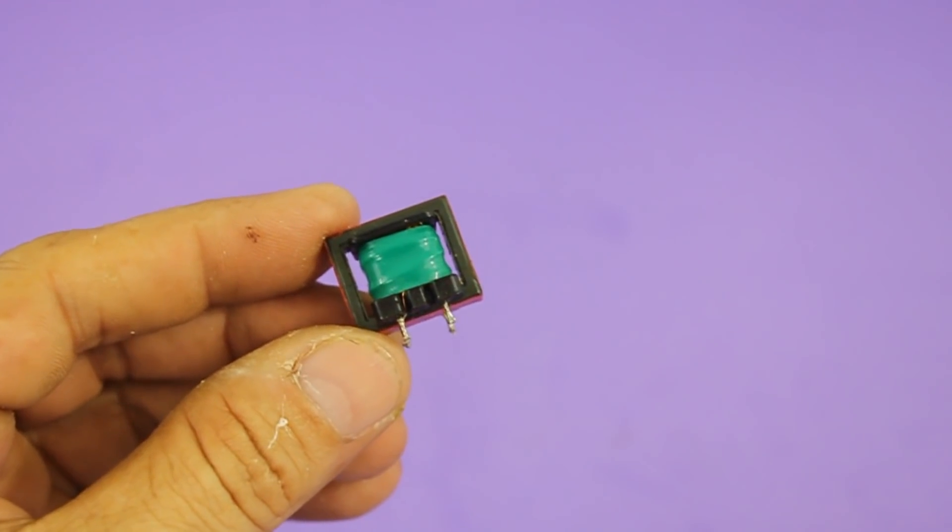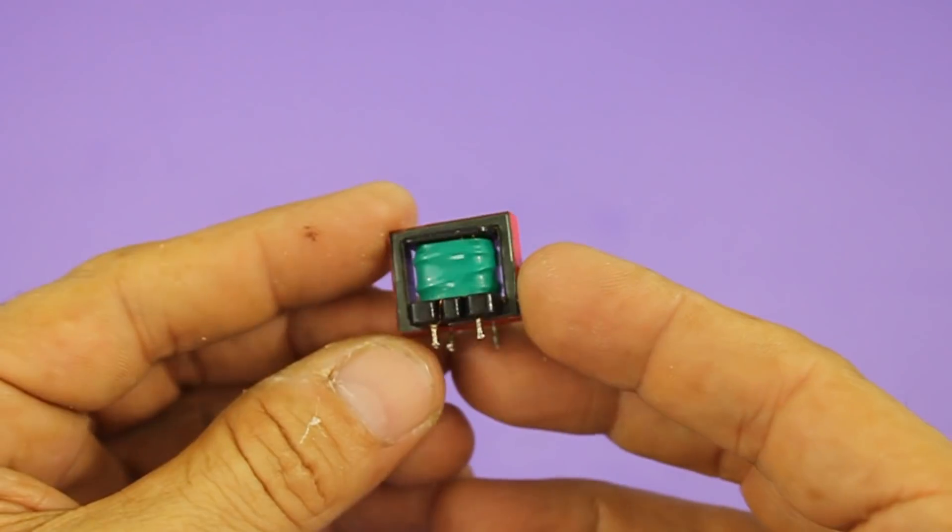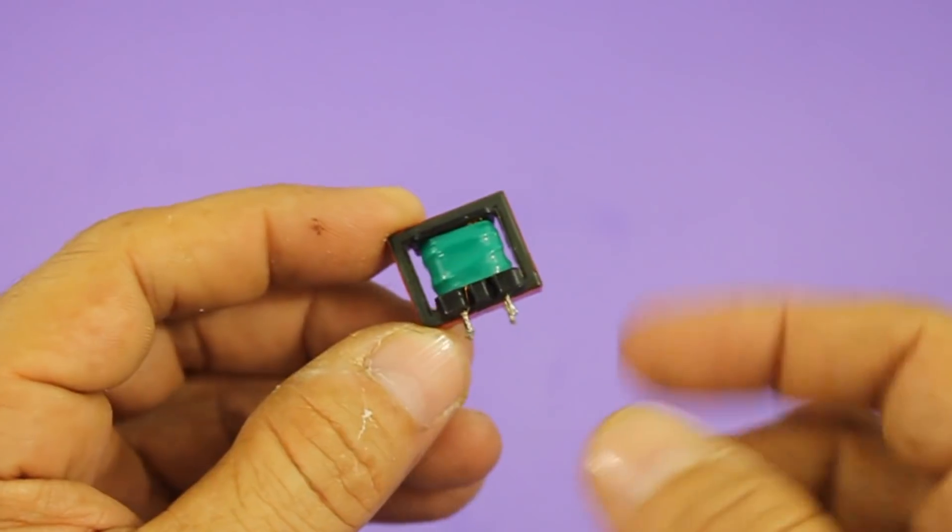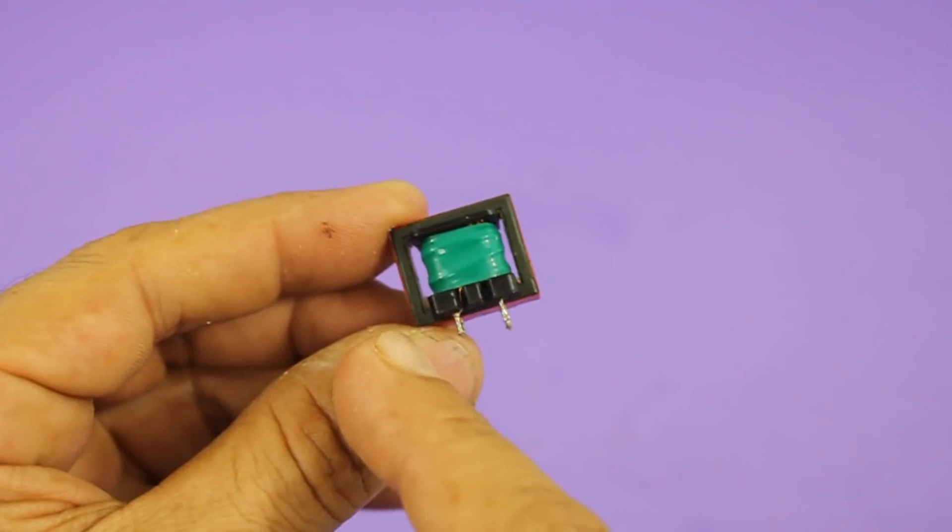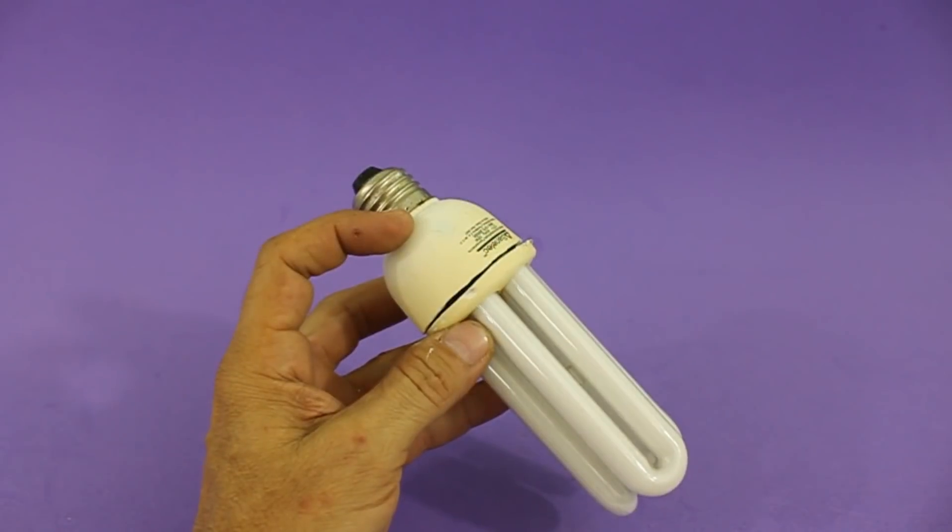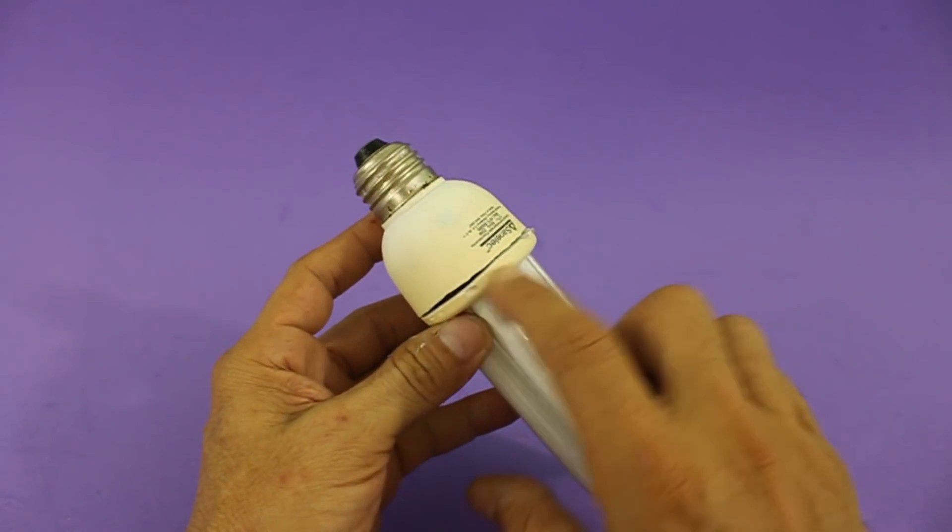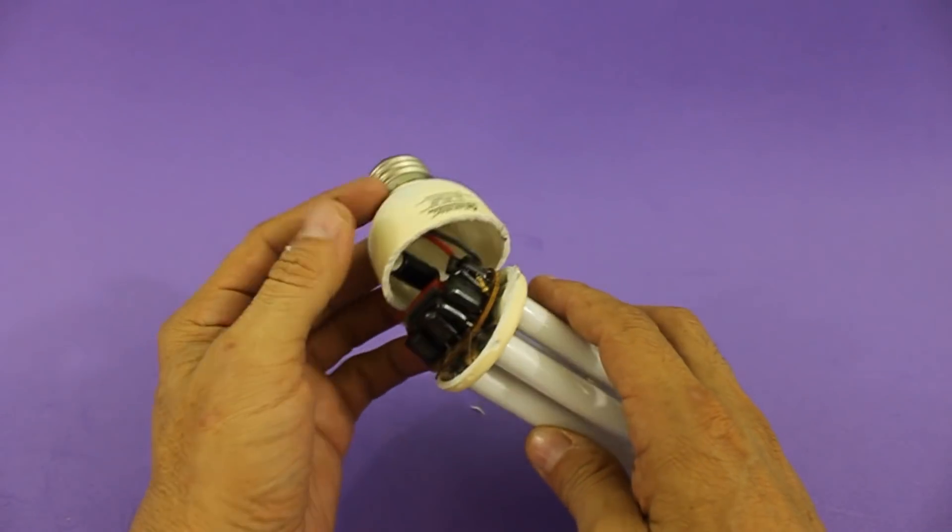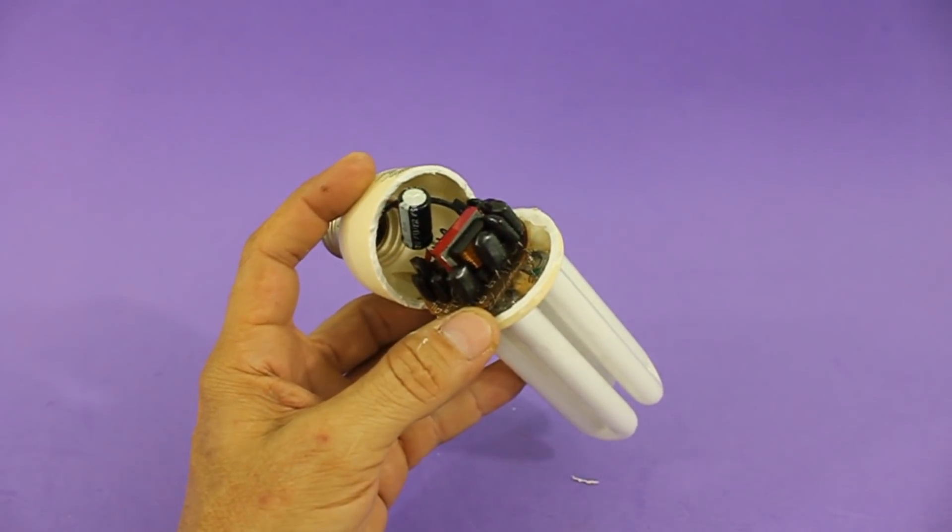In order to make the transformer we need an inductor like this. It looks like a transformer but it actually is an inductor. It has only one coil. We will convert it into a transformer by winding a primary around the existing coil. We can obtain the inductor from a fluorescent lamp like this. After you cut the base you can see the internal circuit and here is the inductor that we need.